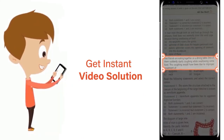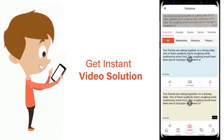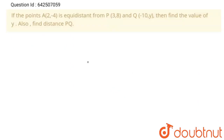Hello students. The question is: if the point A(2, -4) is equidistant from point P(3, 8) and Q(-10, y), then find the value of y. We also have to find the distance PQ.